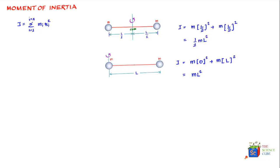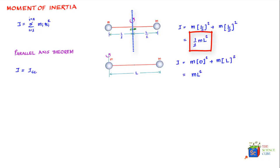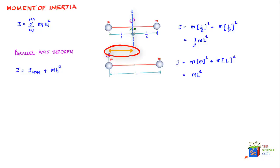There is another approach called the parallel axis theorem, which states that if you know the moment of inertia about an axis passing through the center of mass, you can find the moment of inertia about any parallel axis. The moment of inertia about any axis equals the moment of inertia through the center of mass plus the total mass of the system multiplied by the square of the distance by which the new axis is shifted from the center-of-mass axis.